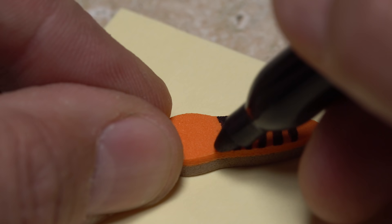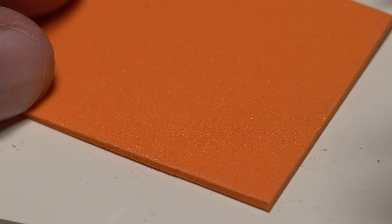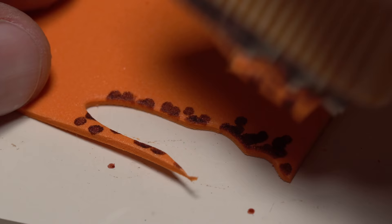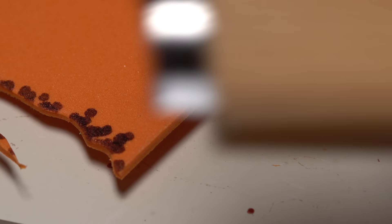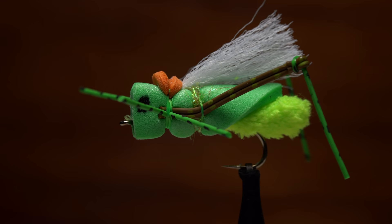Foam also takes permanent marker exceptionally well. It's fine to simply draw on it and maybe produce the look of segmentation like I'm doing here, but as with cutting, I've found that creating a pattern on the sheet prior to cut out makes the end result look that much more natural.